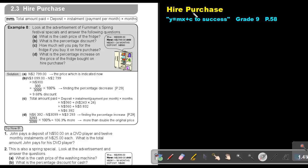Part 6, hire purchase. You will find this on page 58 in the Namibia Mathematics Grade 9 textbook, Y equals MX plus C to success. The total amount paid is the deposit plus the installment multiplied by the amount of months. This is how we work out hire purchase.